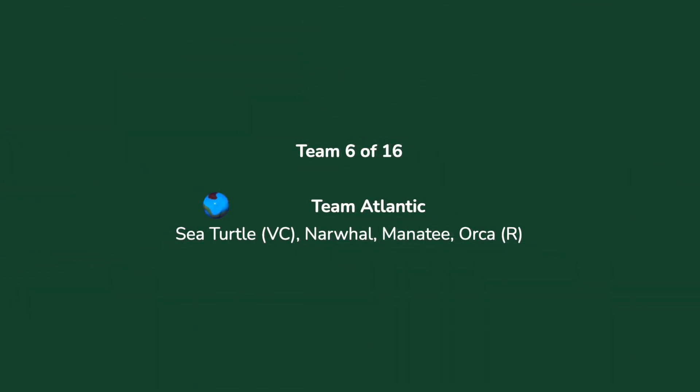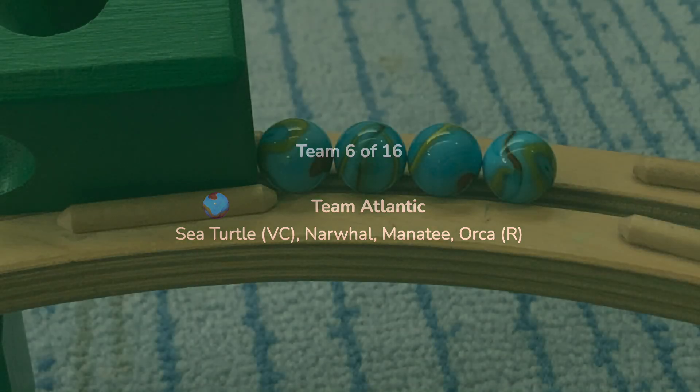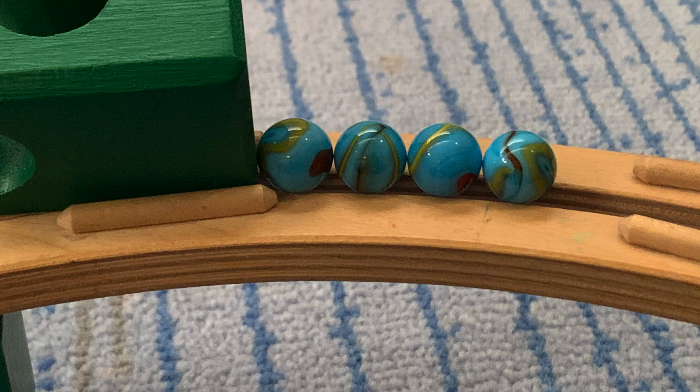Slimy 20, Oozy 7, Muddy 5, and Slippery just 2. You can see they changed up their order once again. You can see how much effort they are putting in to improve on their season one outing. Now team six, Team Atlantic.